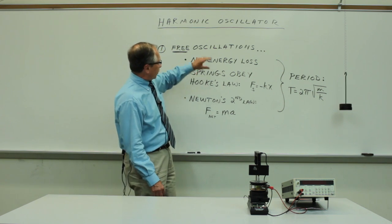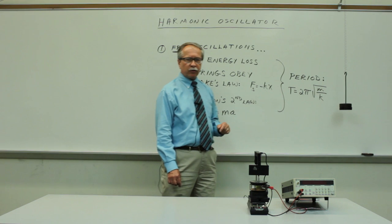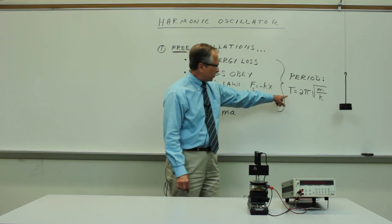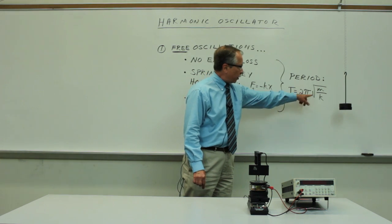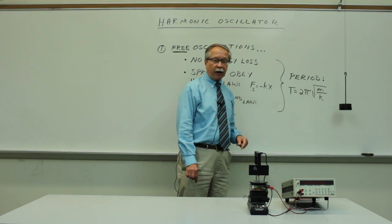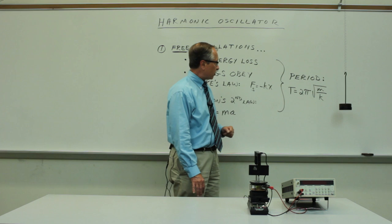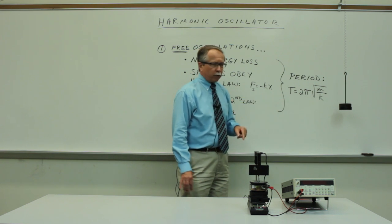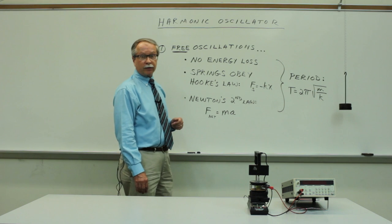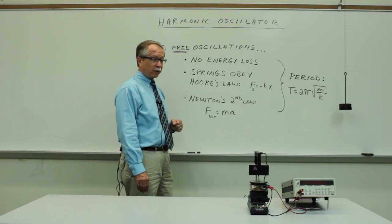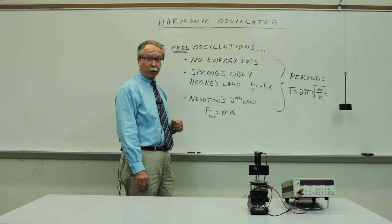Just to recap, we are studying free oscillations of a mass spring system, and the theory predicts that the period of oscillations is 2 pi times the square root of the mass divided by the spring constant. So the measurement of the period is crucial, and standard laboratory procedure suggests that you should make sure that your instrumentation is calibrated.